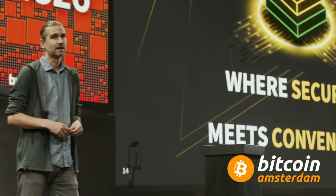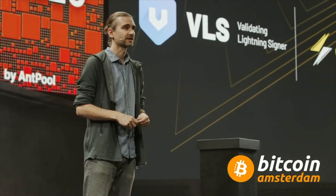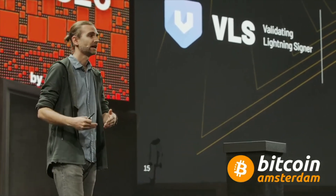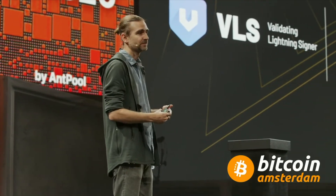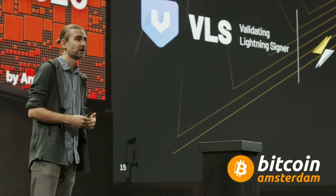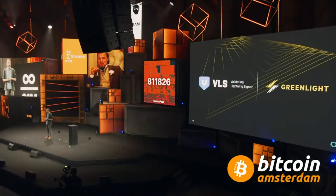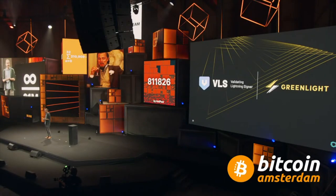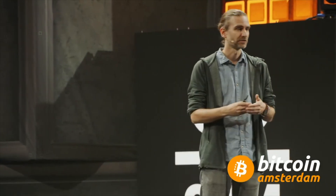Speaking of community, we are working with the Validating Lightning Signer project — a project that has independently built a signer, and this is the basis for our signer. In conjunction with the VLS team, we are also working on building out support for hardware wallets for Lightning. Many people have asked to upgrade their security by not having keys lying around on phones and laptops, and the VLS and Greenlight teams are collaborating closely to make that a reality.